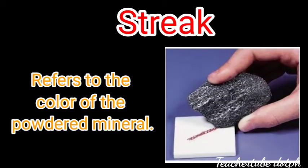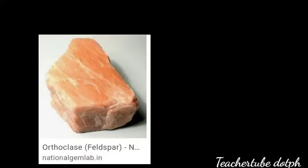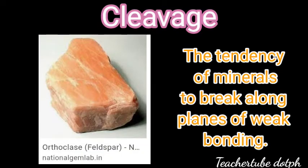The next property is streak. It refers to the color of the powdered mineral — the sample is rubbed across a piece of unglazed porcelain, or streak plate. The next physical property is cleavage.